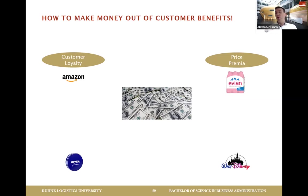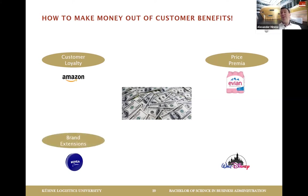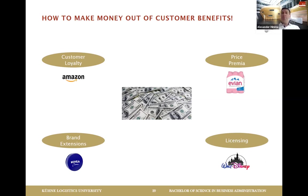Second is price premium: a six-pack of branded water can cost six euros while the same water costs one euro unbranded. The same applies to Apple, luxury cars, or Louis Vuitton bags — you pay more because you feel you deserve it. Third is brand extensions: once you've established a strong brand, you leverage it. Nivea started with the little blue can but now has aftershave, shower gel, and more. Fourth is licensing: Walt Disney created Mickey Mouse and now earns 18 billion US dollars a year just by licensing the character.